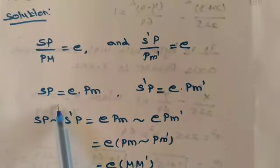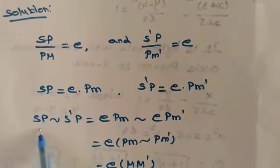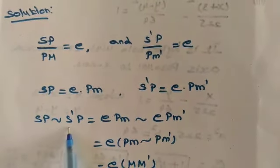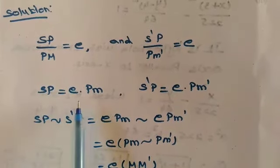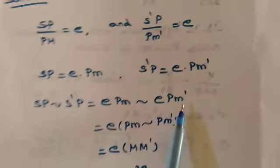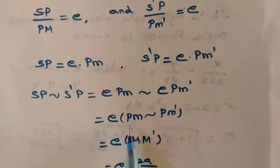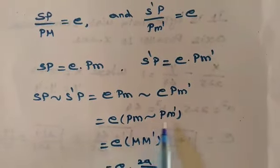Now going to differentiate these two parts. So we get SP difference S dash P is equal to, see this right hand side, e into PM difference e into PM dash. In both the cases e is common, take it outside. See the remainder PM difference PM dash.